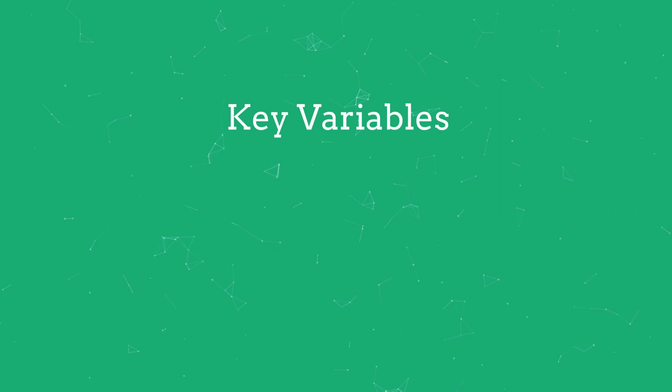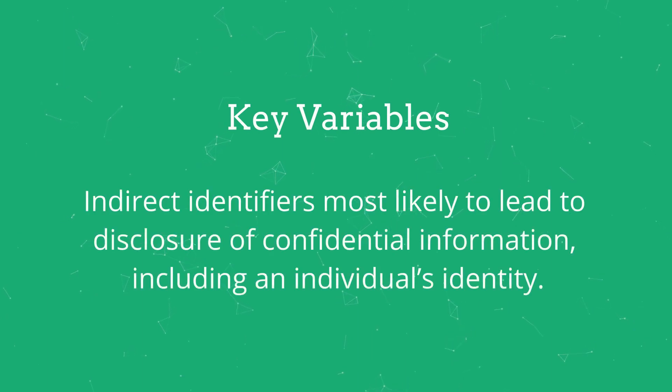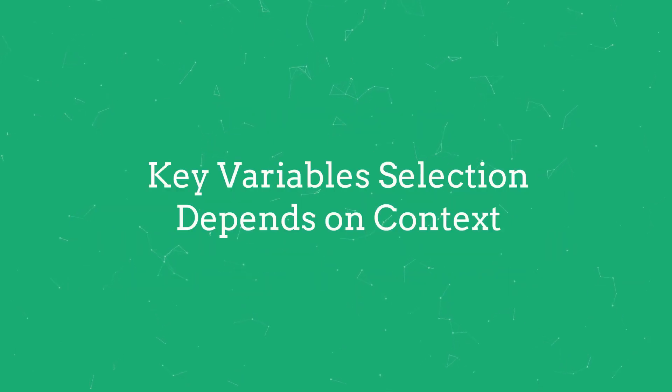Key variables are simply indirect identifiers that are most likely to lead to the disclosure of confidential information, including an individual's identity. In other words, the selection of key variables will depend on the context. There is no magic formula for selecting key variables, and knowledge of the data environment is key.